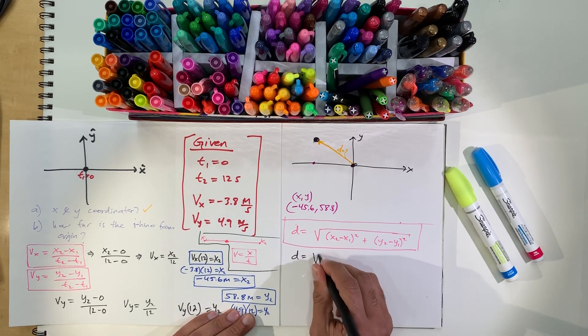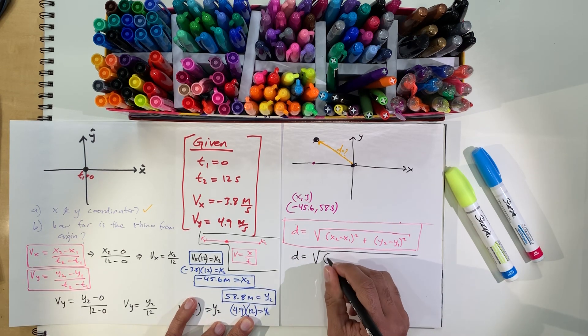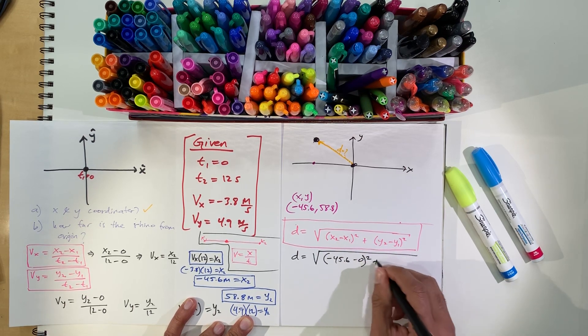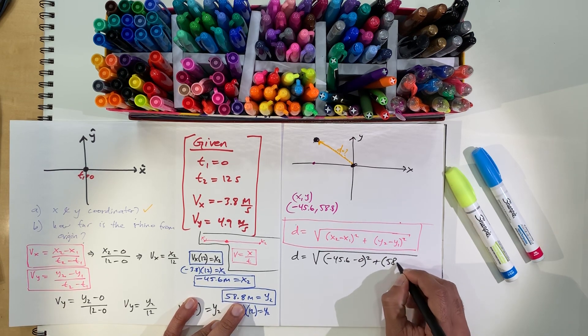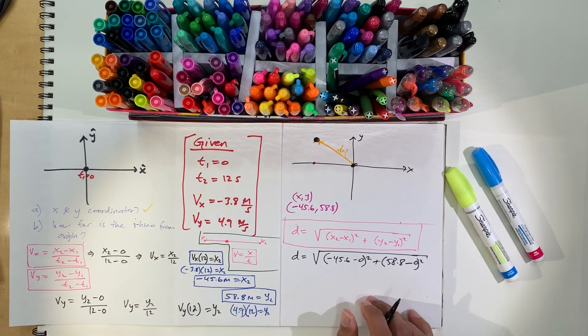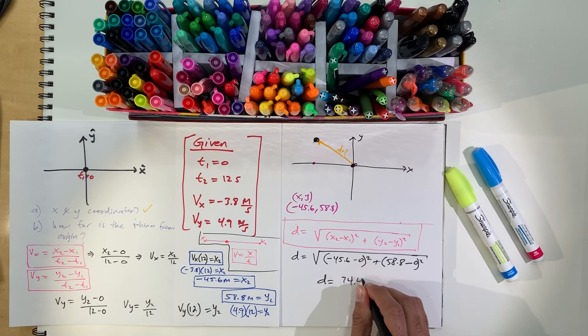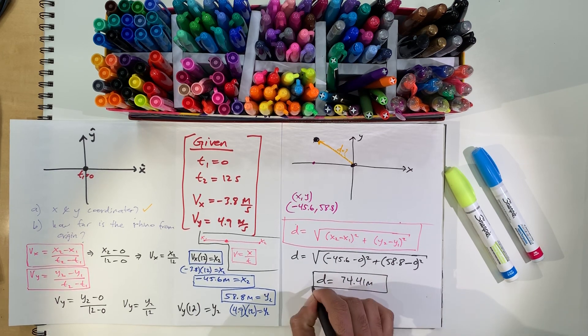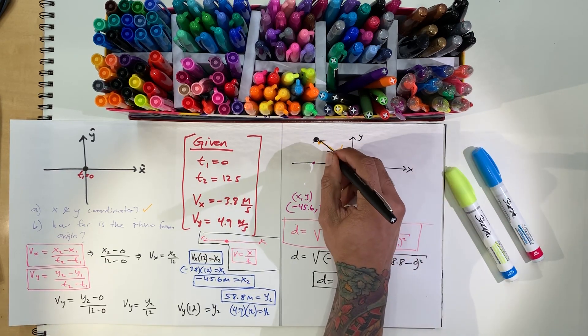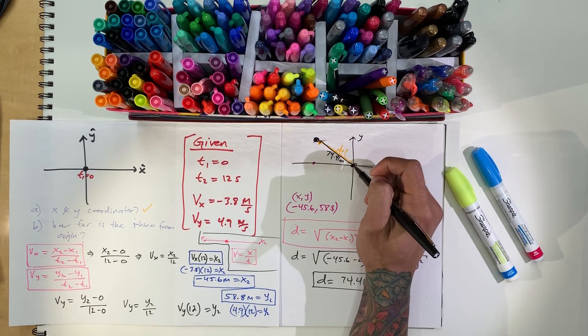All right. We're going to have d is equal to. We have the value of x2, which is negative 45.6 meters. Minus x1, so, minus 0 squared. We found y2, so, it's 58.8 meters. Minus y1, which is 0. Everything squared. And then, calculator action. And we got 74.41 meters. So, that's how far the rhino traveled in this direction here. Like that. So, 74.41 meters. That's how far the rhino is away from the origin.